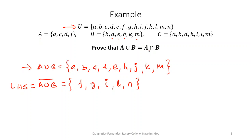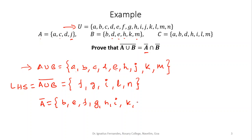Now let us look at the right hand side. First I find A complement — the elements not in A. Going through U, the elements not in A are B, E, F, G, H, I, K, L, M, N — that is, everything except A, C, D, J.